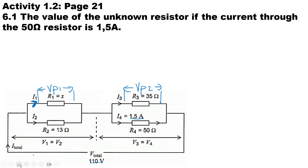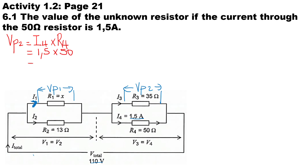To calculate the voltage across the second parallel branch, I multiply the current through the fourth resistor by its value: 1.5 amps times 50 ohms gives us 75 volts. Therefore, 110 volts minus 75 volts means the volt drop across the first branch is 35 volts, and the volt drop across the second branch is 75 volts.